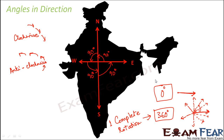Now, between 0 degree and 360 degree there could be many different angles, and in order to keep our study simpler, we have assigned different names to different categories of angles. So let us look at those various types of angles.